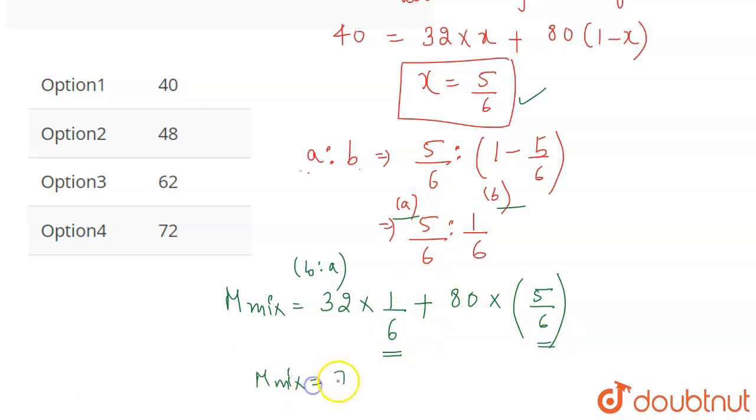The molar mass of the mixture will come out to be 72 which is given to us in option number 4. So option 4 is the correct answer for the question.